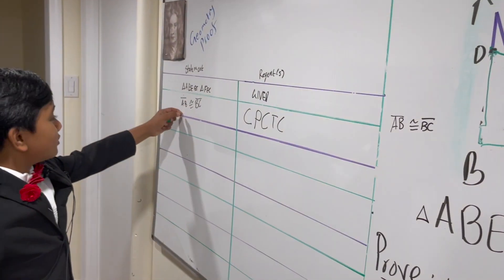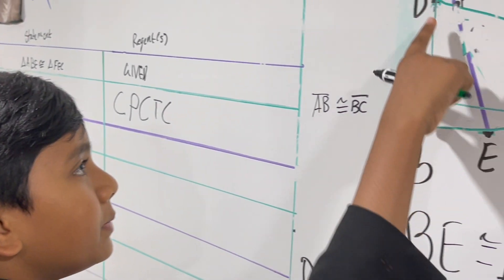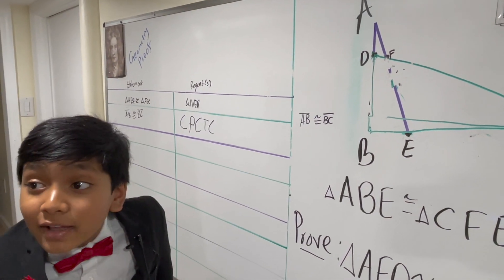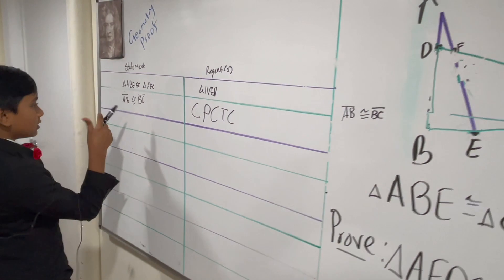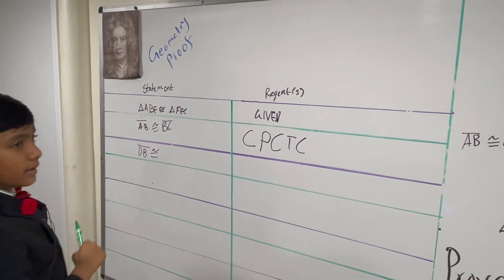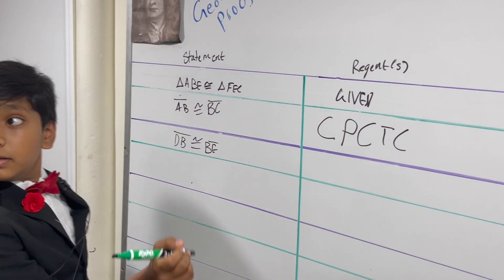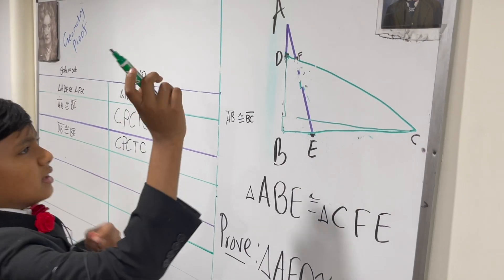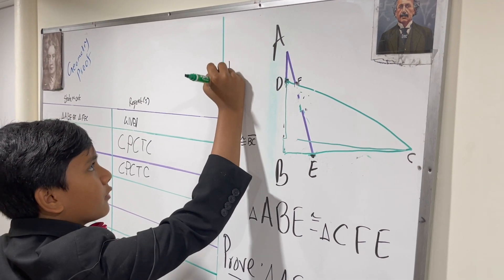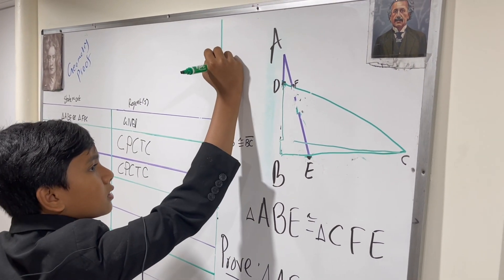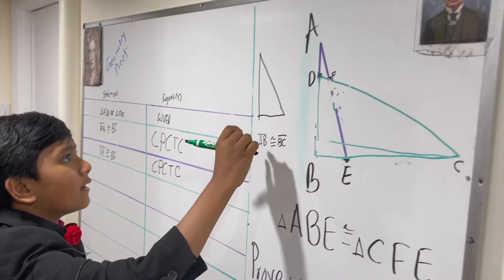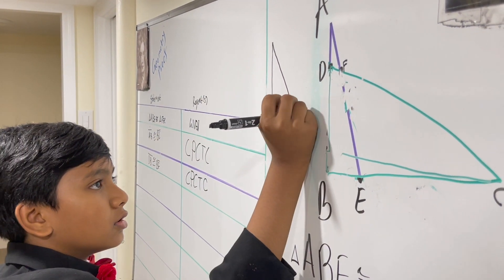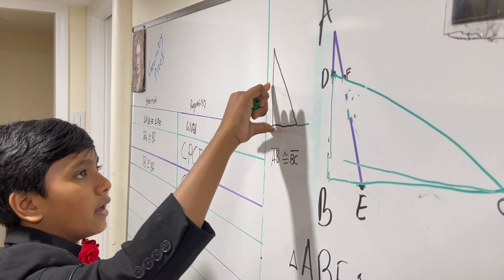Now we are going to prove that DB is equal to BE — even though it definitely doesn't look like that visually because someone sabotaged the whiteboard. DB is congruent to BE, once again because corresponding parts of congruent triangles are congruent, CPCTC.